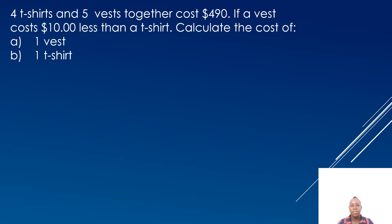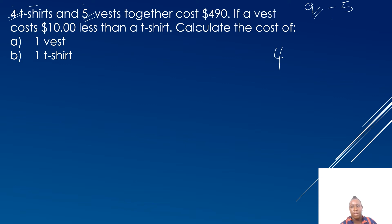In our second example, I made a change to the question. Four t-shirts and five vests together cost $490. If a vest costs $10 less than a t-shirt, calculate the cost of one vest and one t-shirt. We are dealing with a total of nine parts. To calculate the cost of nine vests, I have five vests, so nine subtract five gives me four. I'm going to multiply four by ten — four tens are forty.